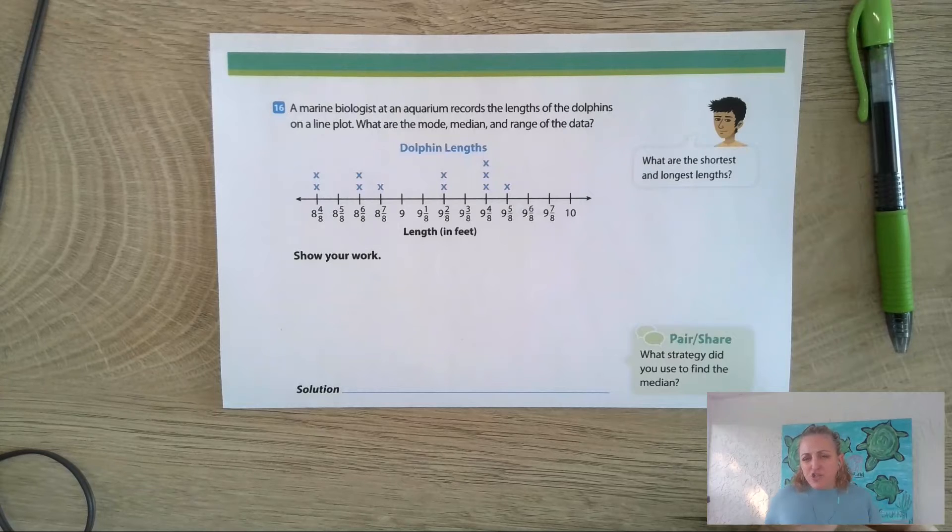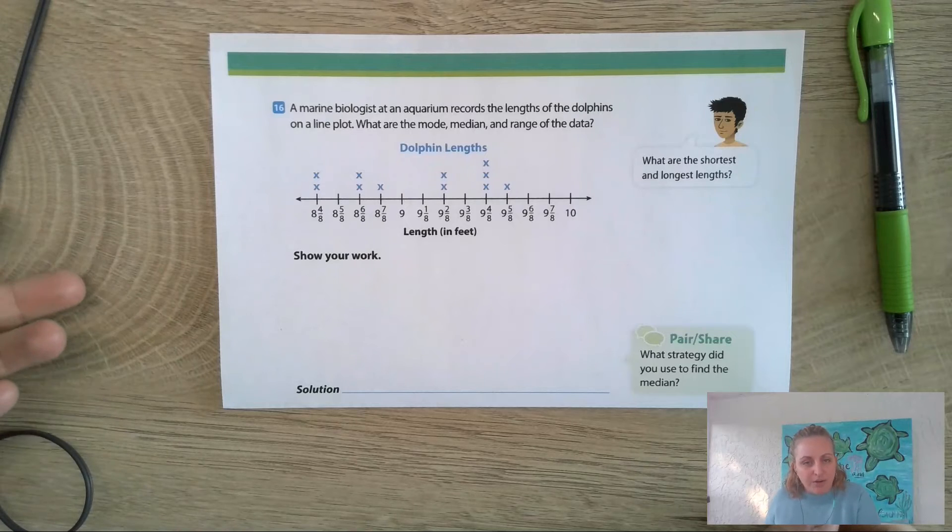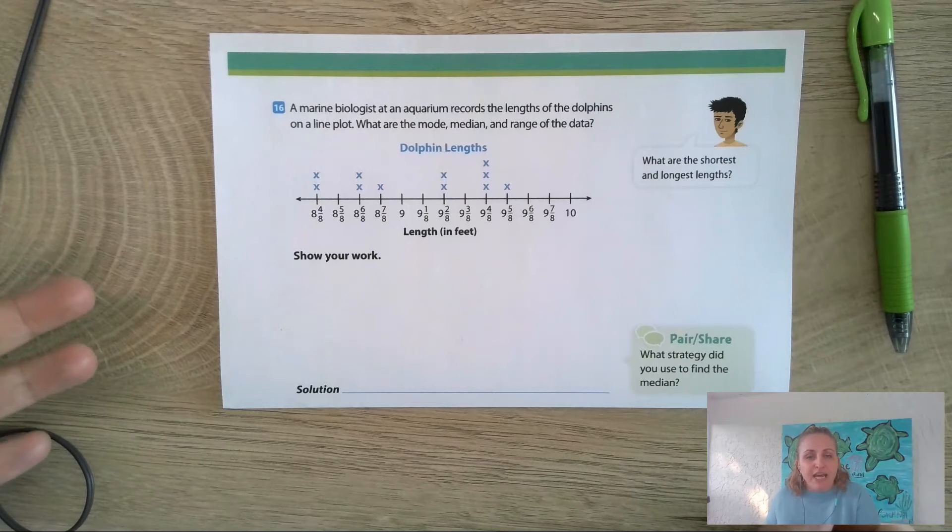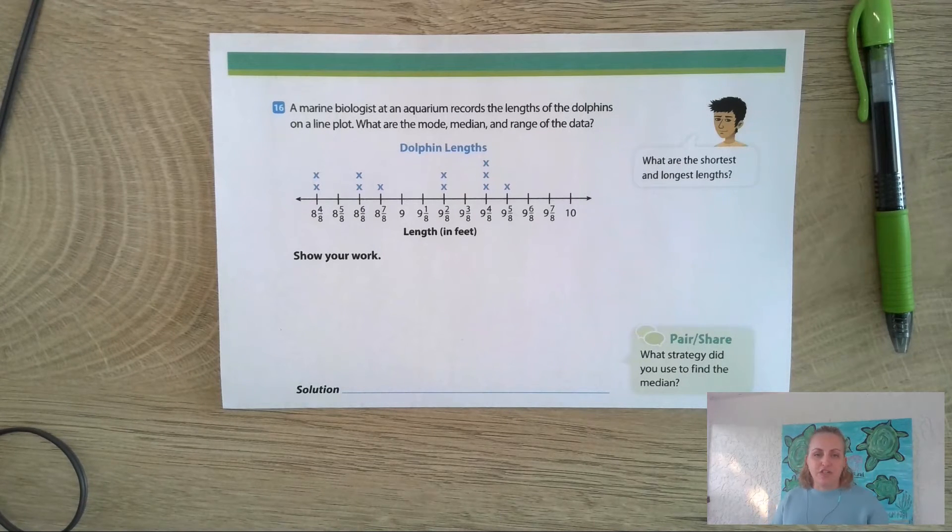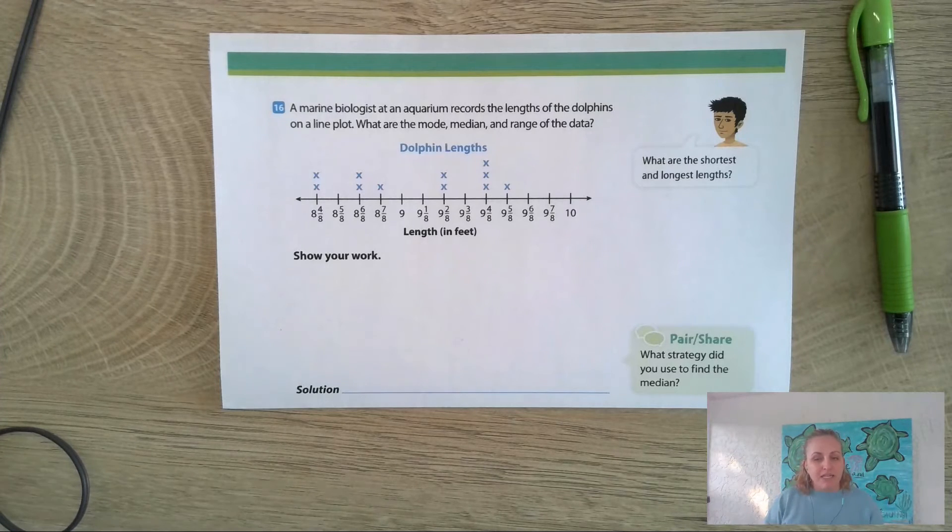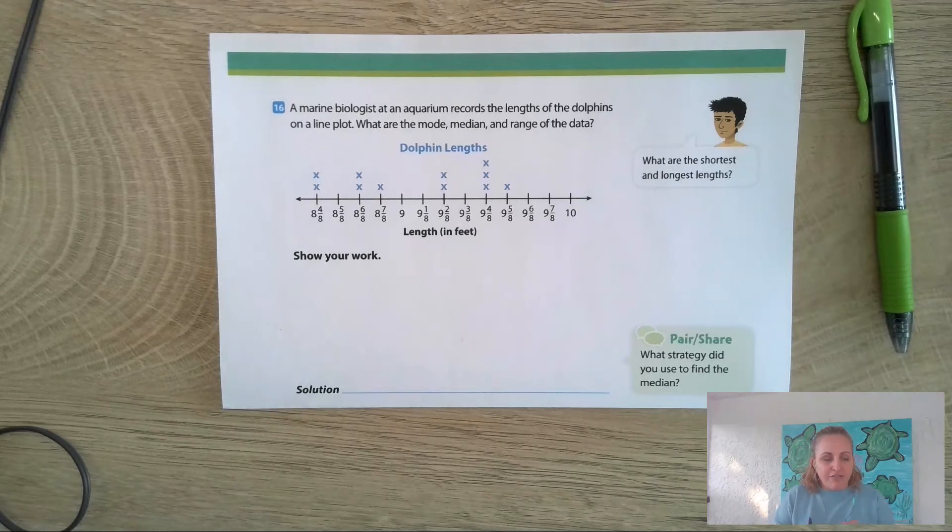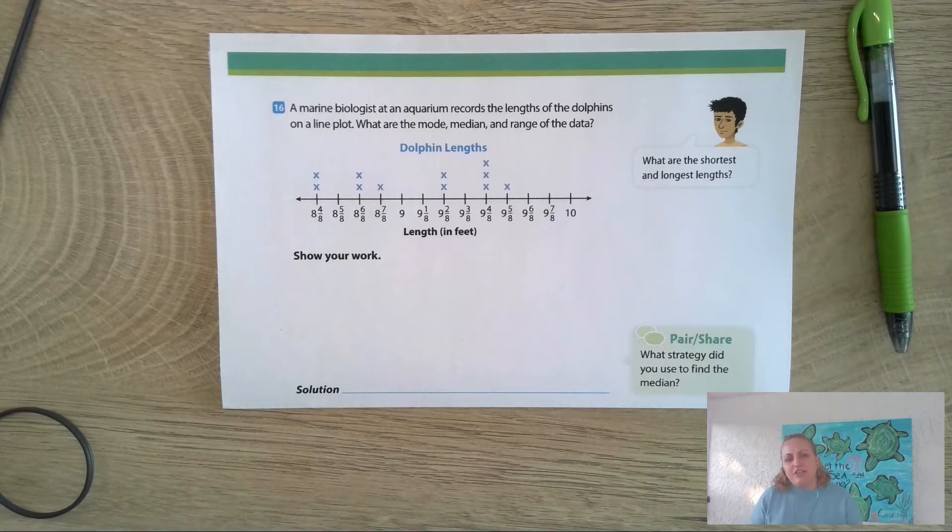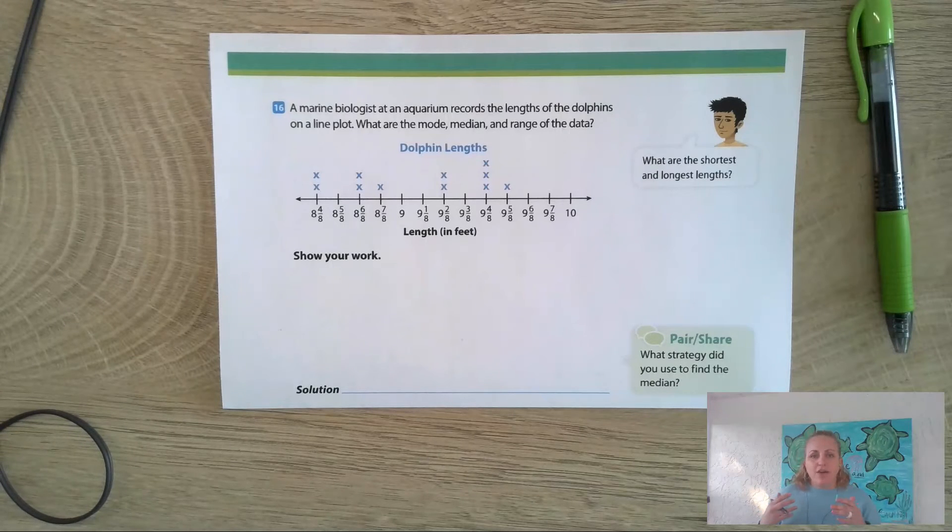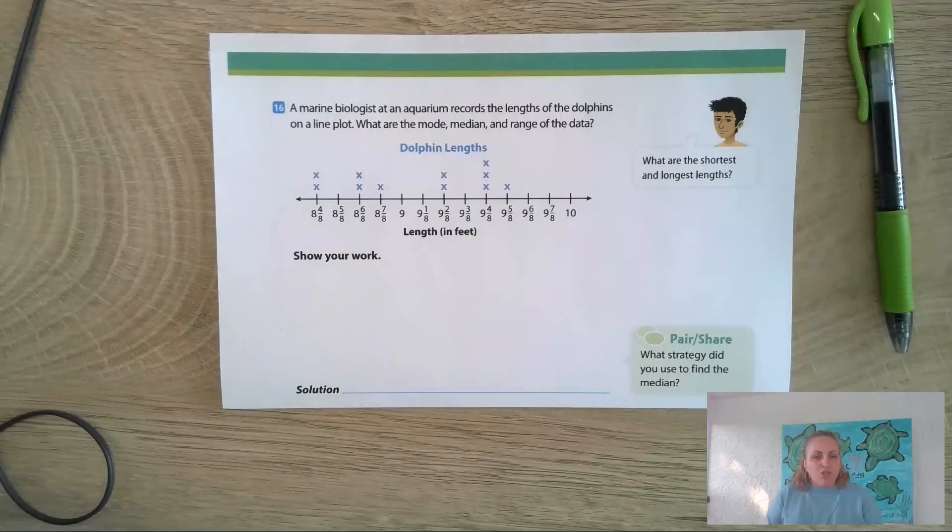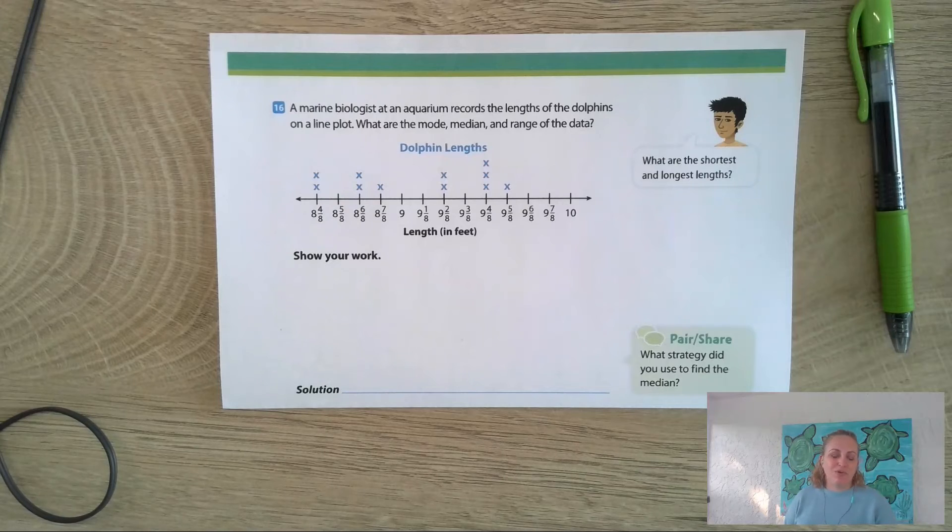Really quickly, just to show how this could be applied to real life, this would be something that marine biologists working at an aquarium would actually do. They would be measuring their dolphins, and they would want to know the median, the mode, and the range because they want to make sure that their dolphins are healthy. If the dolphin is really far away from the median length or size of dolphins, then there might be something going on with that dolphin.